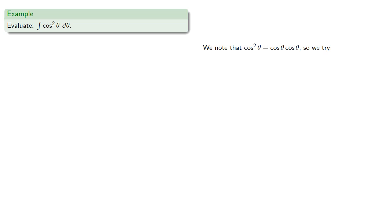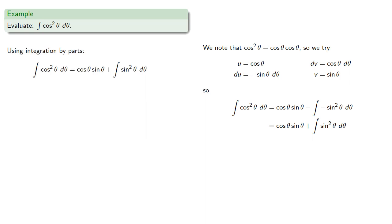We note that cosine squared is cosine times cosine, so we'll let u be cosine and dv be cosine. And we'll differentiate and integrate. And integration by parts will give us...